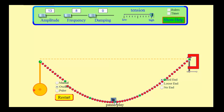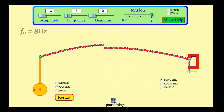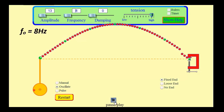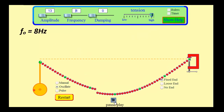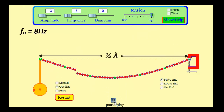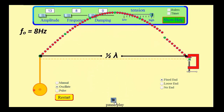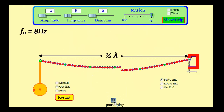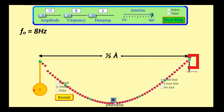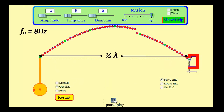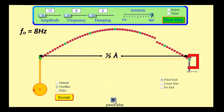Now this is called our fundamental frequency, and it turns out you can create standing waves that are called harmonics at whole number multiples of the fundamental. So what does that mean?